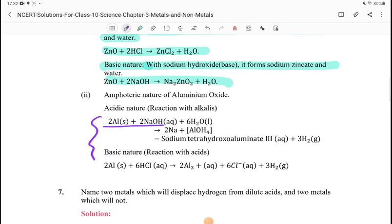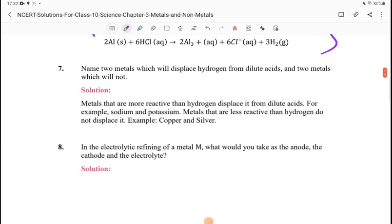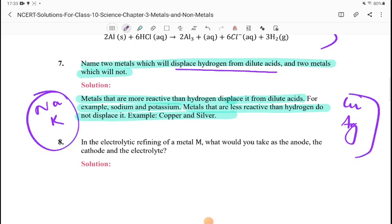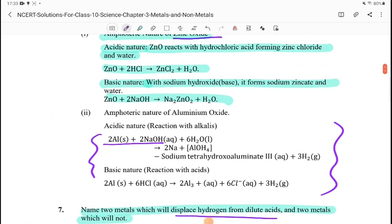Question 7: Name two metals which will displace hydrogen from dilute acids and two metals which will not. Metals that are more reactive than hydrogen displace it from dilute acid, for example sodium and potassium. Metals that are less reactive than hydrogen do not displace it, for example copper and silver.